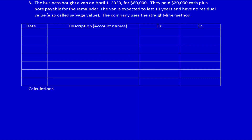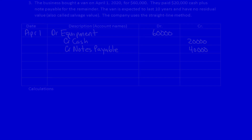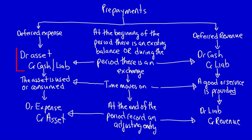Let's move the page down. We start with an exchange between two parties on April 1st. What did the company get? They got a van which they can use in the future — in fact, for a full 10 years. So this is a long-lived asset, property, plant and equipment: debit equipment $60,000. What did they give away? First, cash $20,000, and also a promise to pay the supplier in the future — notes payable $40,000. This matches our flowchart: we got an asset by purchasing it with cash and a liability.